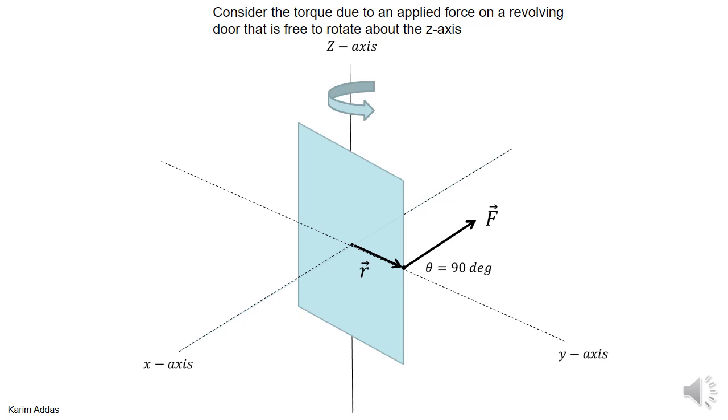Okay, so let's first review the concept of torque that you've taken in mechanics before. Let's say you have a revolving door, and the door is allowed to rotate about the Z-axis. The center of the door is attached to an axis that can rotate, and the door exists in this picture in the Y-Z plane.